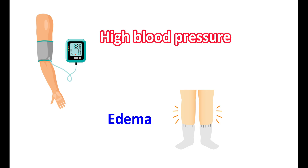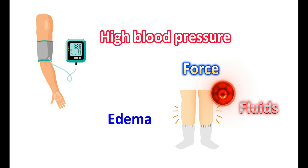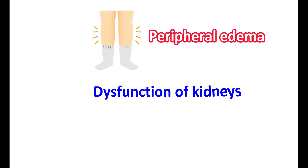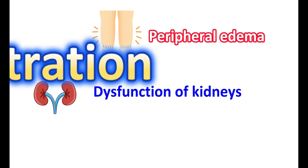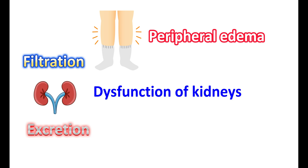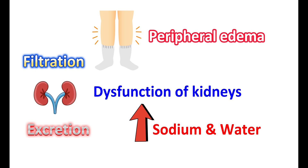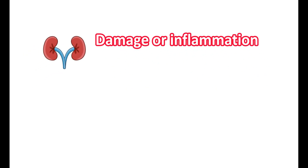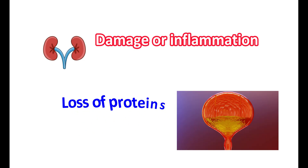High blood pressure can also lead to edema. If you have chronic hypertension, your blood vessels may lose their elastic property. High pressure can force fluids to enter into the tissues, leading to swelling and edema. Another reason for peripheral edema is any dysfunction of your kidneys. Kidneys are responsible for the filtration and excretion of excess body fluids. When they are not working properly, sodium and water are more retained in the body, resulting in swelling in your legs.